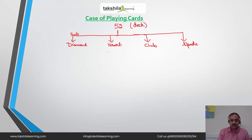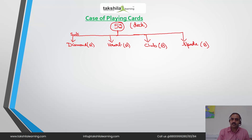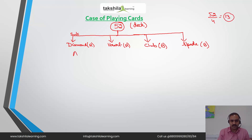Diamond is red, heart is red, club is black, and spade is black. A deck of 52 cards contains four suits, and each suit contains 13 cards, starting with Ace.